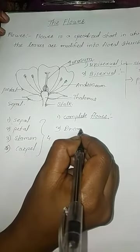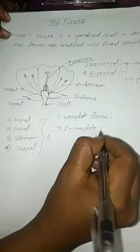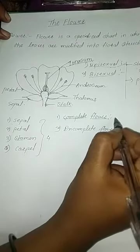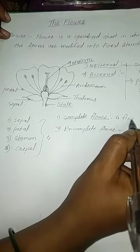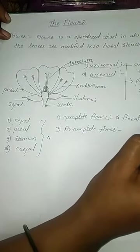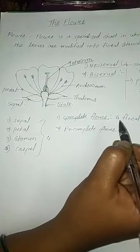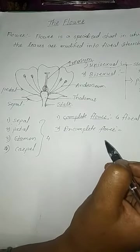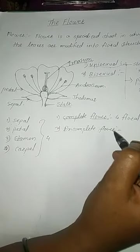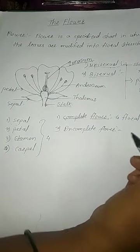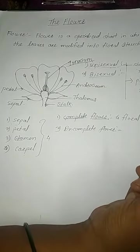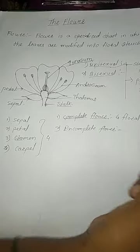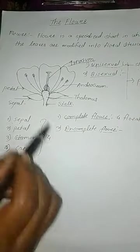The incomplete flower means the flower which is missing one or more floral parts. If the stamen, sepal, or petal is absent, that flower is called an incomplete or imperfect flower.